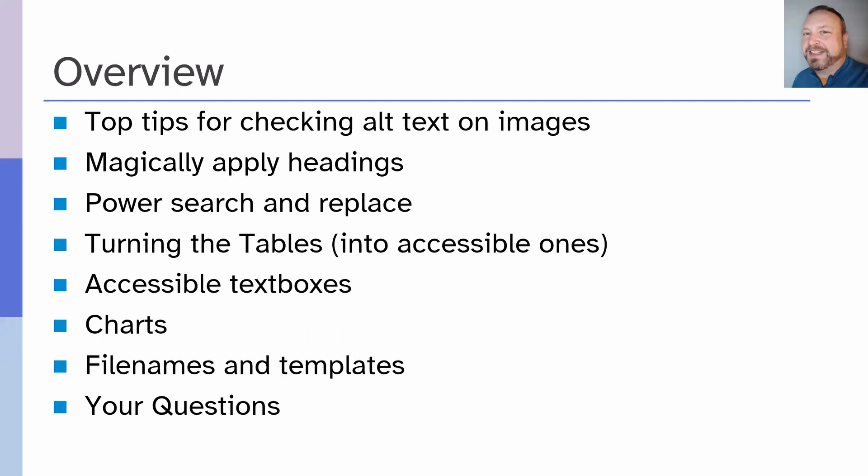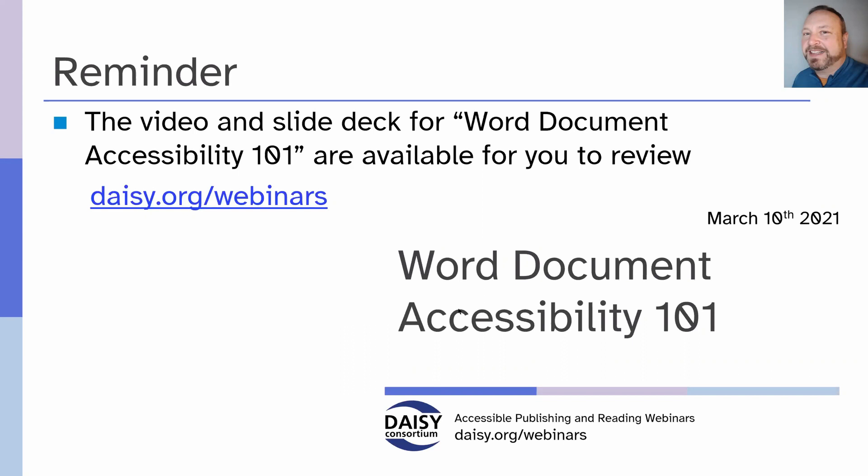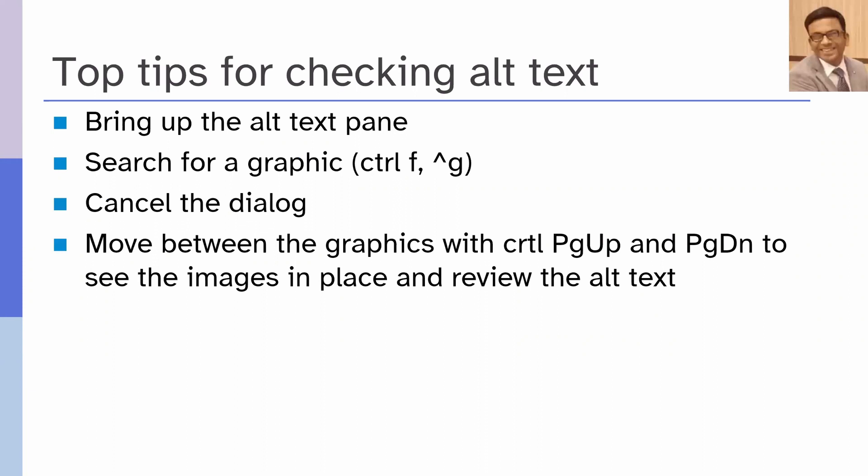Let's start with a reminder: we have previously done the Word Accessibility 101 webinar, and the slide deck and the video of that session is available for you to rewatch and share with your colleagues at daisy.org/webinars. There's lots of great information in there. We're going further in this webinar. And what we're going to look at first is top tips for checking alt text.